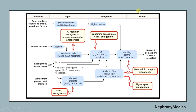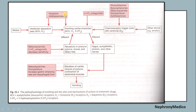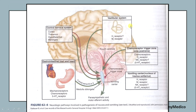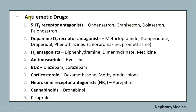This picture shows the pathophysiology of vomiting and the drugs acting as antiemetic agents. Antiemetic drugs include 5-HT3 receptor antagonists like ondansetron, granisetron, dolasetron, and palonosetron, and dopamine D2 receptor antagonists like metoclopramide and domperidone.